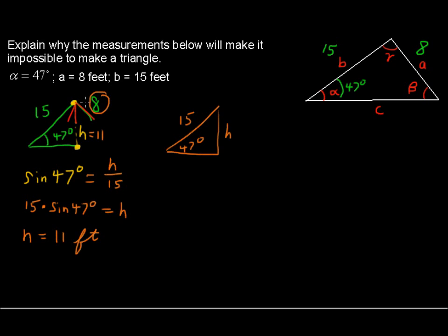You can see it's kind of like a swinging gate that'll never reach the other side of the fence. I like this idea of swinging gates. So that is an idea, or an example, of an ambiguous case where there is no triangle.